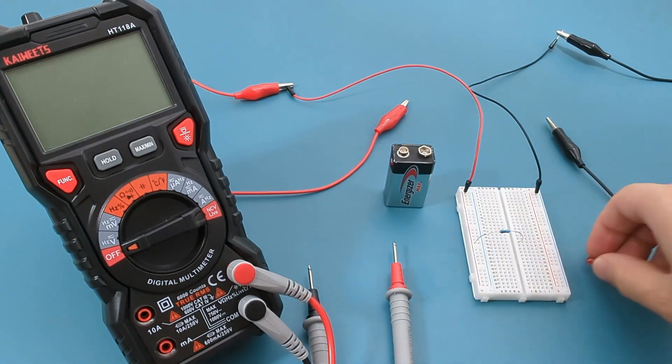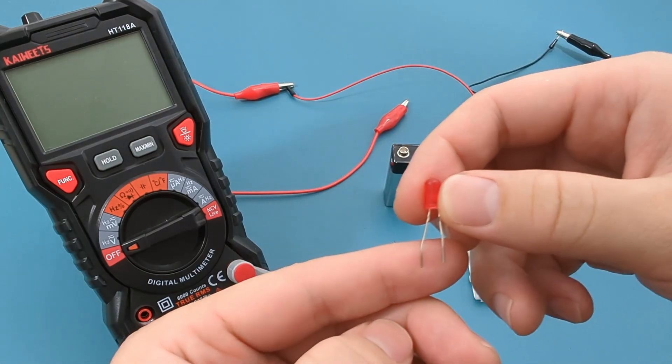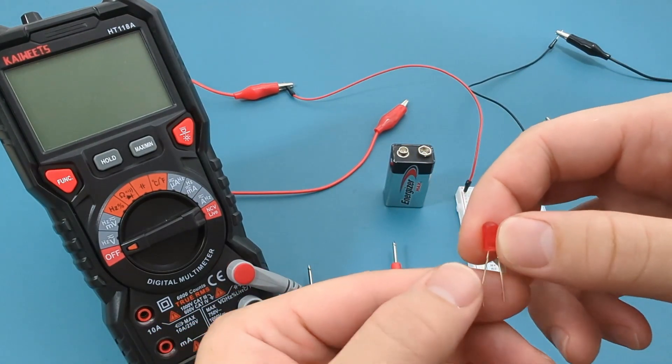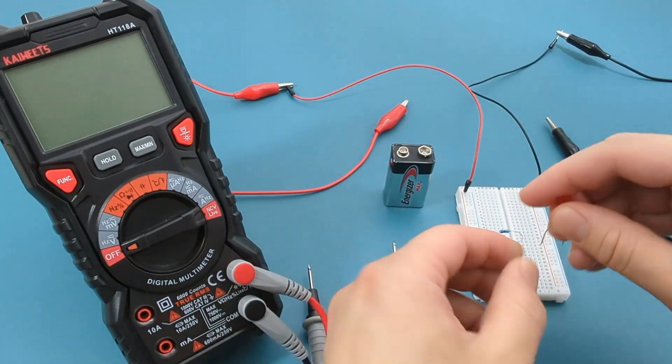For the LED, I'm using a red LED with a forward voltage of around 2 volts. Make sure the longer leg or positive terminal is on the left.